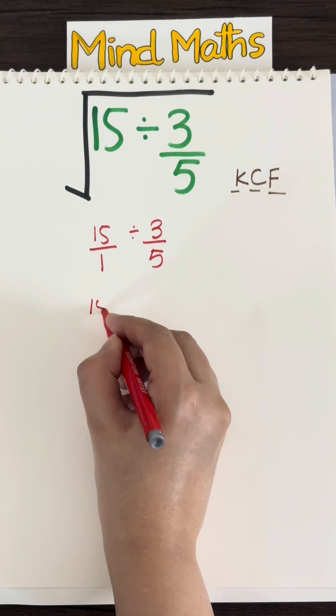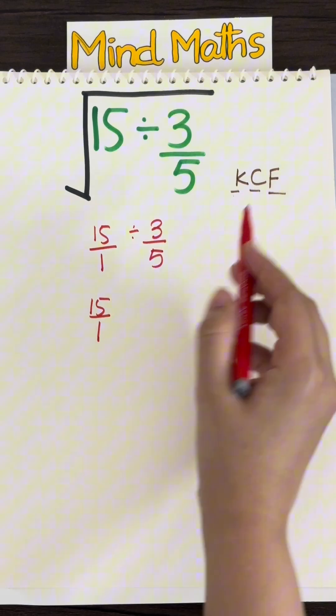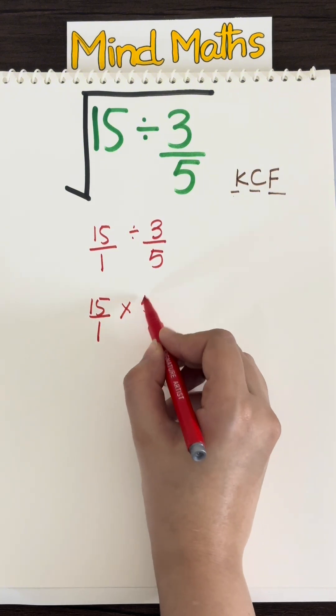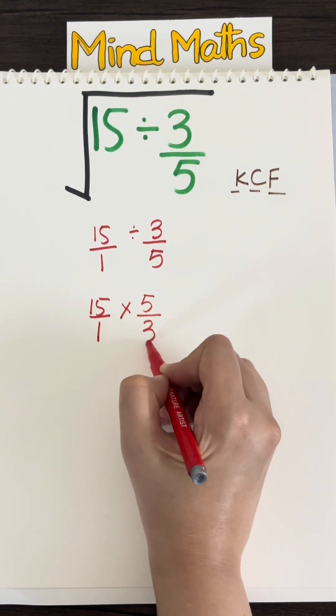So what do I keep? I keep 15 over 1 and I am going to change from division to multiplication. Lastly I am going to flip 3 over 5 to its reciprocal which in this case is 5 over 3.